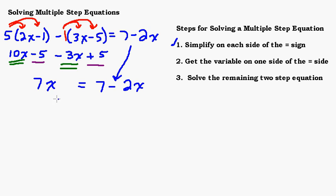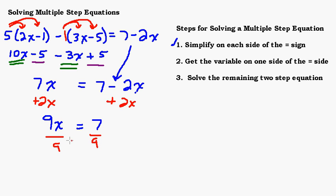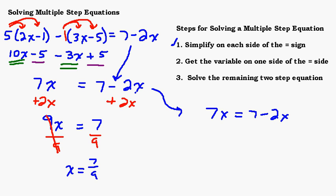Step two: get the variable on the same side. I have 7x on the left and negative 2x on the right. I'll add 2x to both sides, giving 9x equals 7. Then dividing both sides by 9 gives x equals 7 ninths. If you had subtracted 7x from both sides instead, that's also legal — what you do to one side you do to the other.